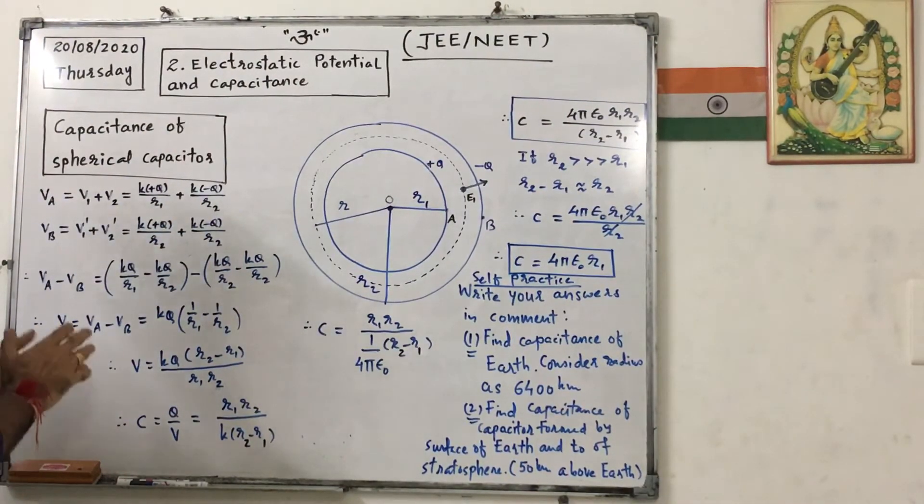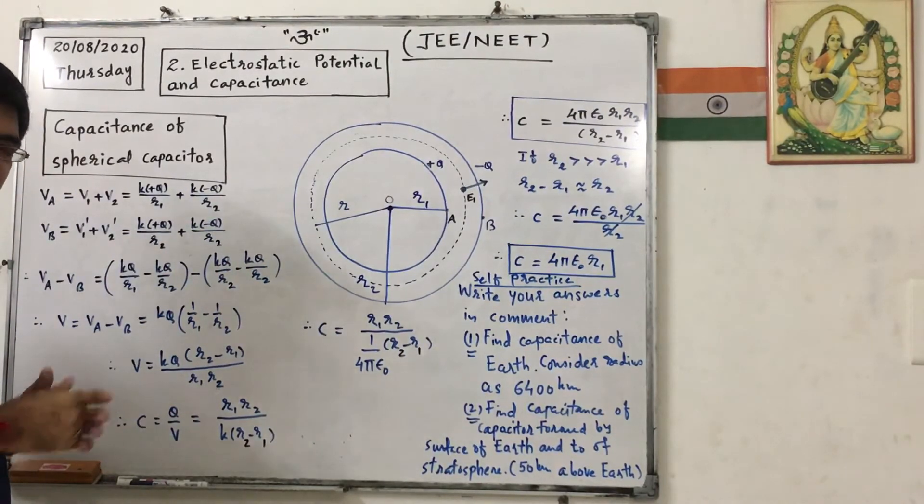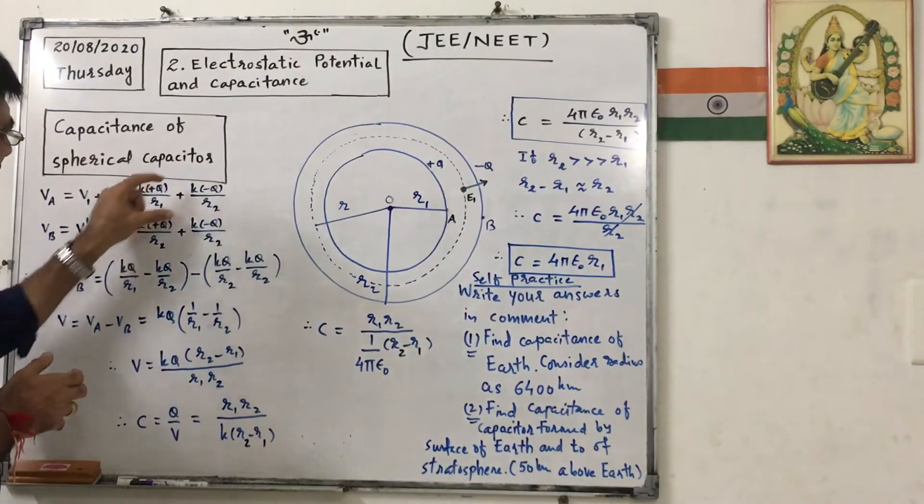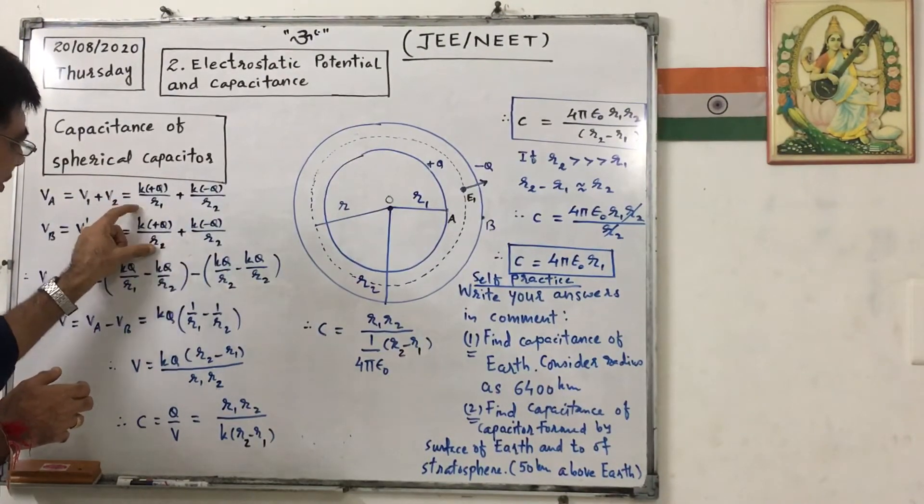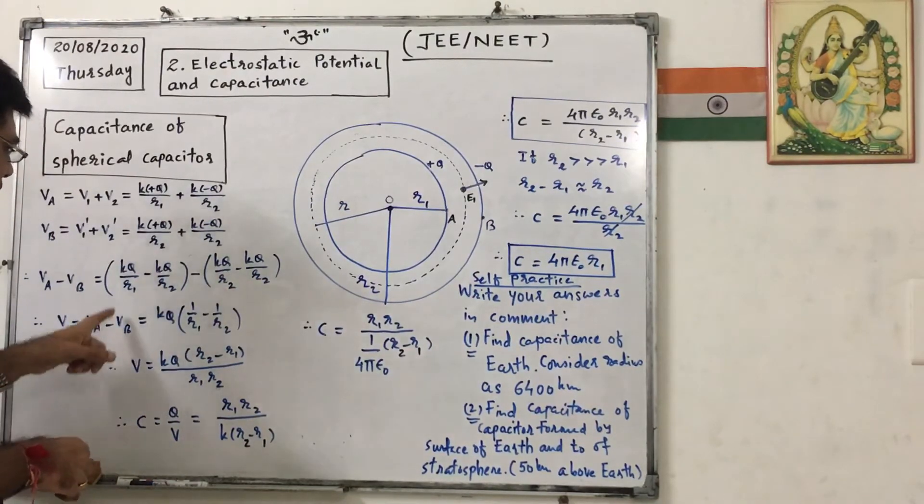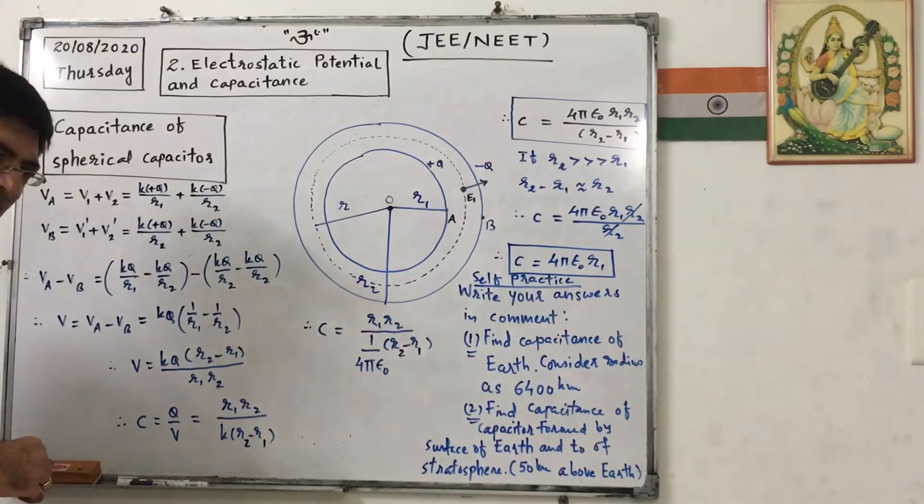So now, potential difference, that is VA minus VB, because we know that smaller has more potential. So that is KQ by R1 minus KQ by R2 minus of KQ by R2, this is 0. So taking KQ common, it will be 1 upon R1 minus 1 upon R2, say it as V, potential difference.